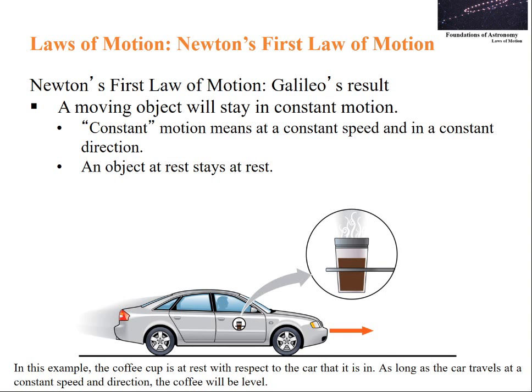Let's understand Newton's first law of motion. It is nothing but Galileo's law restated. A moving object will stay in constant motion. Constant motion means at constant speed and in constant direction. An object at rest stays at rest. In this example, you can see the coffee cup is at rest with respect to the car that it is in. As long as the car travels at a constant speed and direction, the coffee will be level.